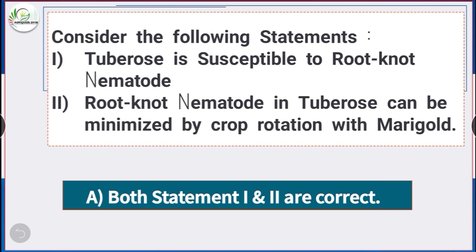Question number 14: Consider the following statements. Statement 1: Tuberose is susceptible to root knot nematode. Statement 2: Root knot nematode in tuberose can be minimized by crop rotation with marigold. Both statements 1 and 2 are correct.